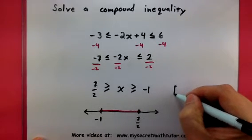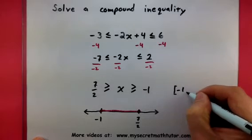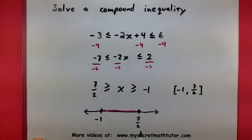In interval notation, it looks a lot like this number line. All the values between negative one and seven halves. And I'm using these brackets to say that the points are included. And there you have it. If you'd like to see some more videos, please visit MySecretMathTutor.com.